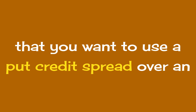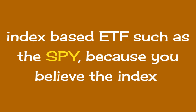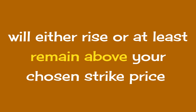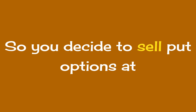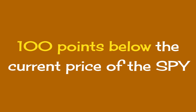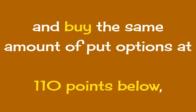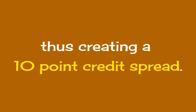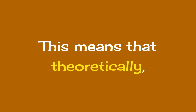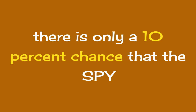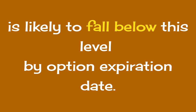Let's say for example that you want to use a put credit spread over an index-based ETF such as the SPY, because you believe the index will either rise or at least remain above your chosen strike price by option expiration date. So you decide to sell put options at 100 points below the current price of the SPY and buy the same amount of put options at 110 points below, thus creating a 10-point credit spread. You observe that the options delta for the 100 strike price is 0.10 or 10%, meaning that theoretically there is only a 10% chance that the SPY is likely to fall below this level by option expiration date.